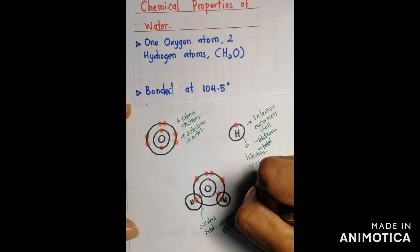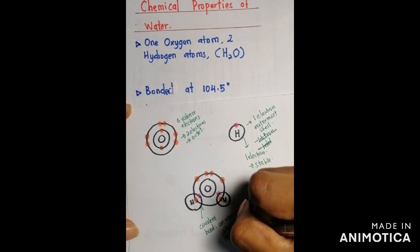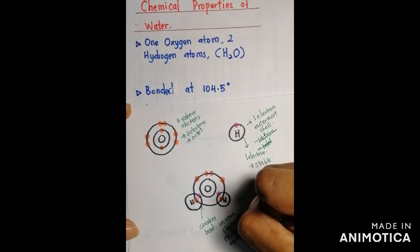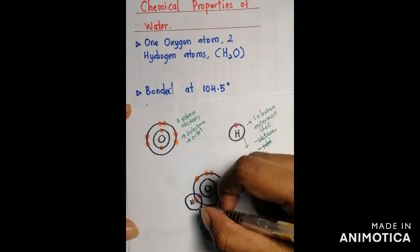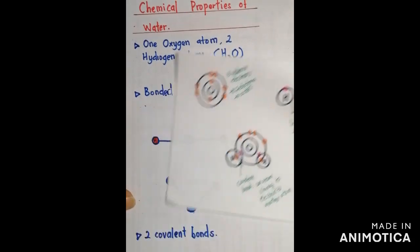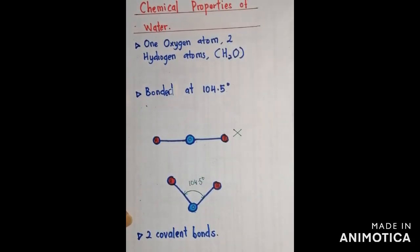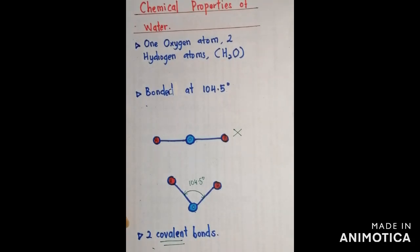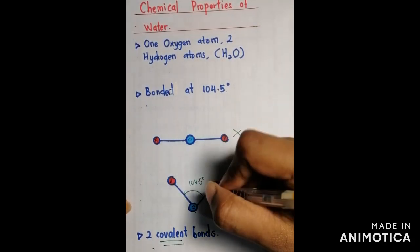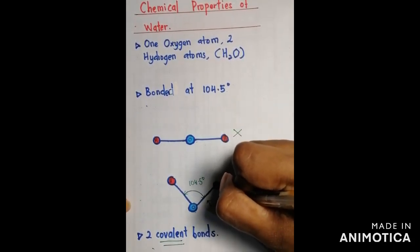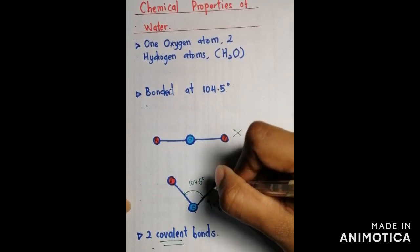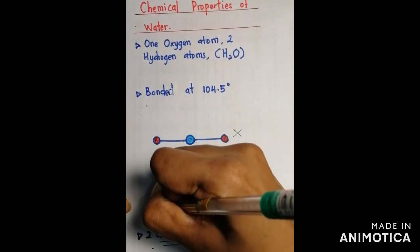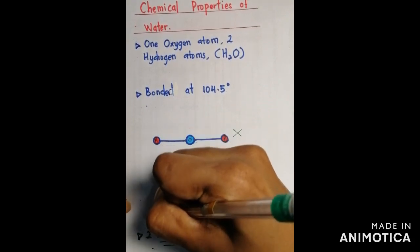A covalent bond is when an atom shares its electron with another atom. Oxygen has two covalent bonds — one with each hydrogen atom. The bond between the oxygen atom and hydrogen atom is called a covalent bond.